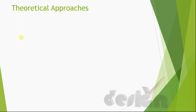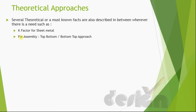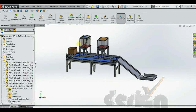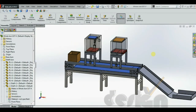You will also learn some basic theoretical approaches such as the K-factor for sheet metal, which governs bending, and the mathematical approach of flat pattern view and bending. The assembly follows a top-bottom to bottom-top approach. Let's start the tutorial — this is the completed assembly of the packaging machine.